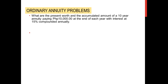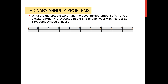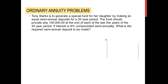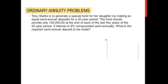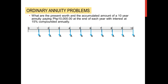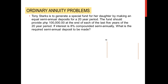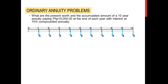The previous problem stated the same parameters as the first example — what are the present worth and accumulated amount of a 10-year annuity paying 10,000 pesos at the end of each year with interest at 15% compounded annually. That problem should be a different one instead.